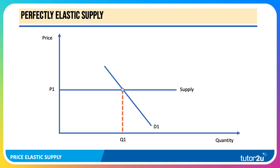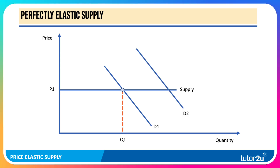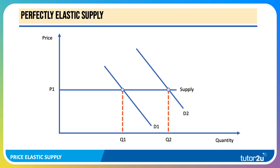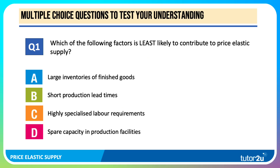Of course, you can go to the extreme — this is a perfectly elastic supply curve. This basically means the firm can supply goods and services at the same marginal cost. So if demand increases from D1 to D2, the firm can increase output from Q1 to Q2 without any need for an increase in price.